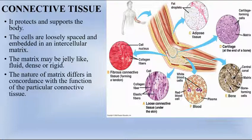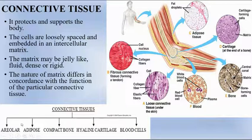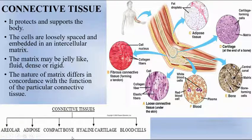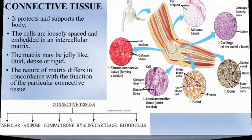Based on the function assigned to the connective tissue, the nature of the matrix is decided. The different types of connective tissue we are going to learn are: areolar connective tissue, adipose connective tissue, compact bone tissue, hyaline cartilage tissue, and blood cells.